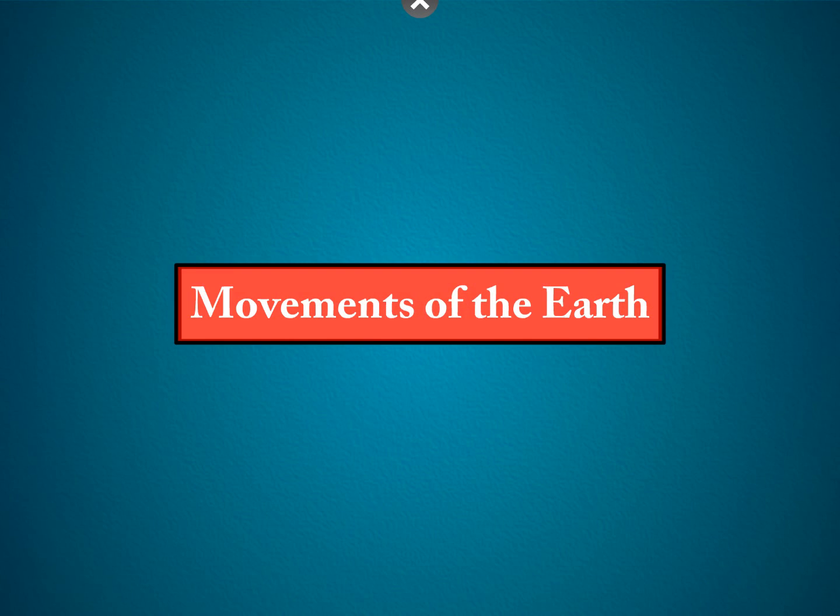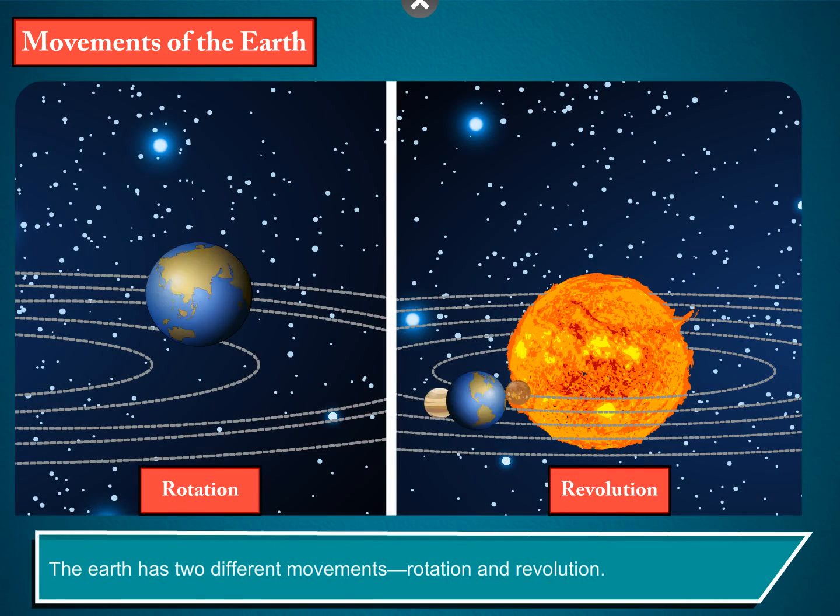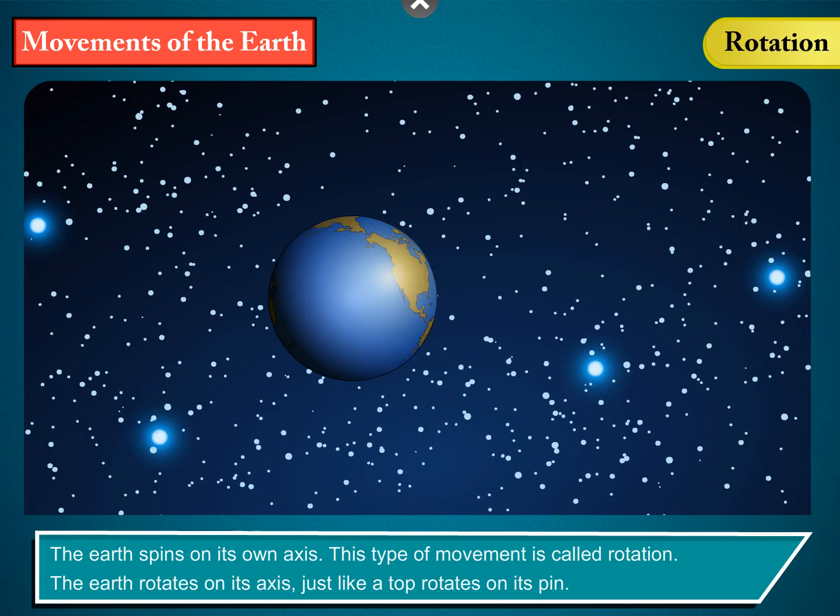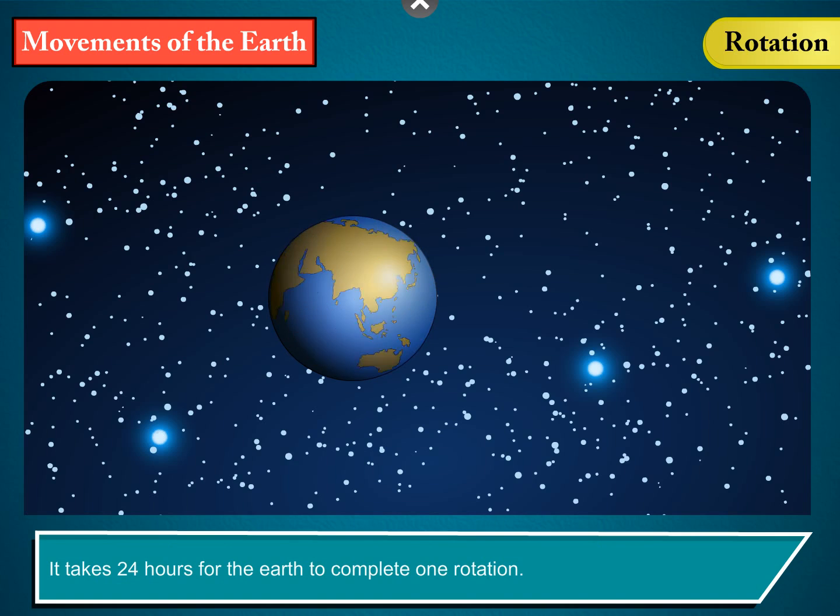Movements of the Earth: The Earth has two different movements, rotation and revolution. Rotation: The Earth spins on its own axis. This type of movement is called rotation. The Earth rotates on its axis, just like a top rotates on its pin. It takes 24 hours for the Earth to complete one rotation.